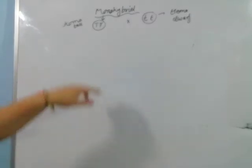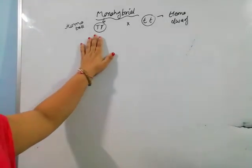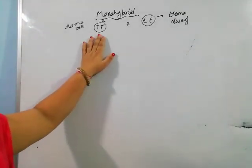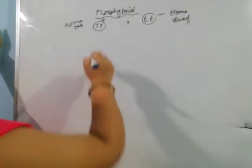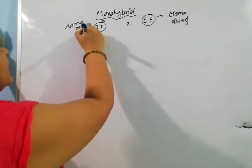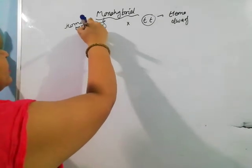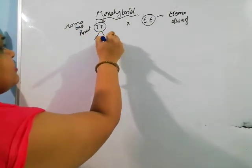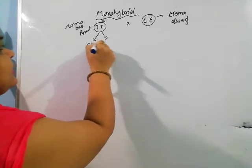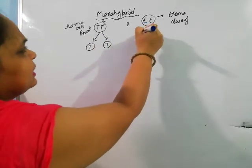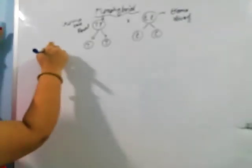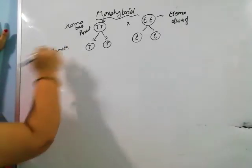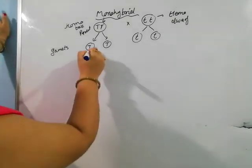This plant has one male and one female character inside, so here we have two factors. Now, parents are called homozygous. Parents produce gametes — capital T here and capital T here for the tall parent, and small t and small t for the dwarf parent. So these are the gametes.